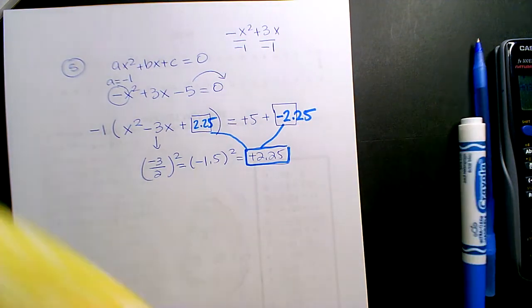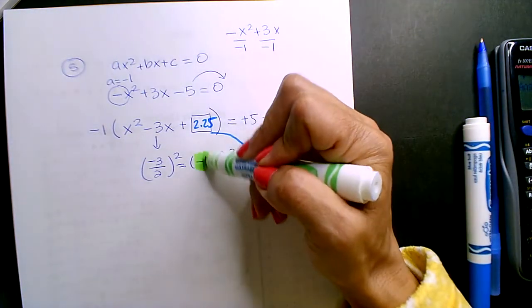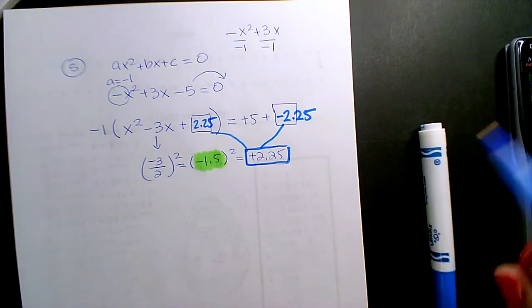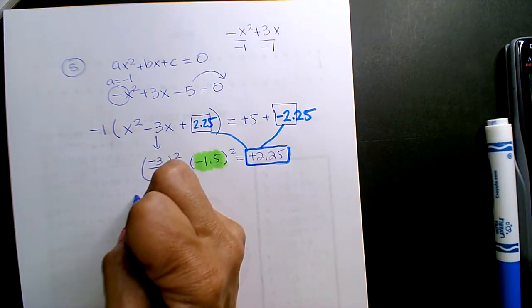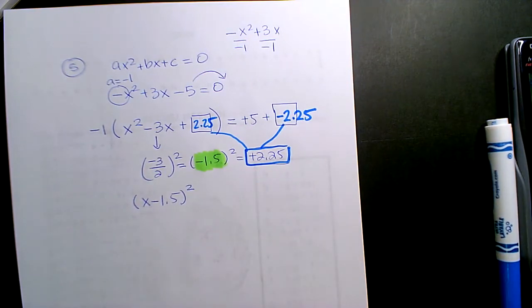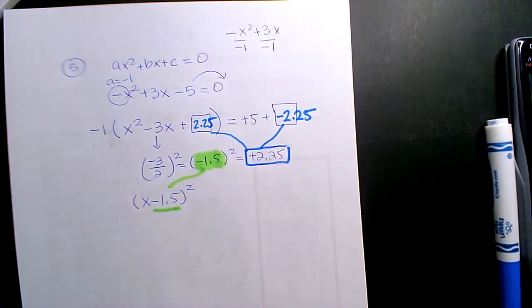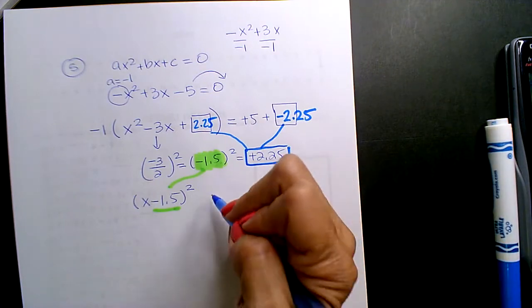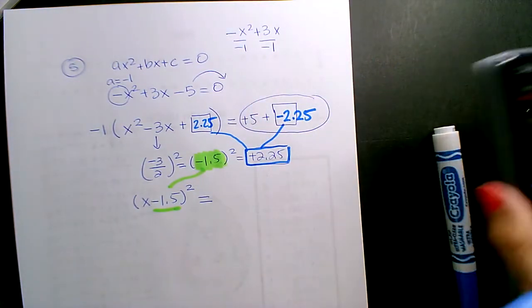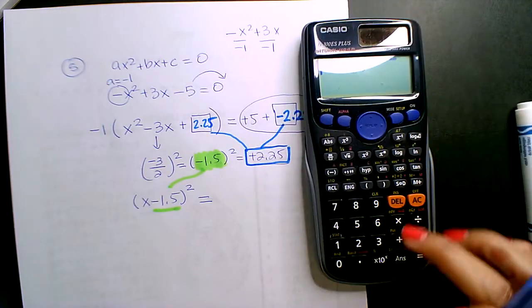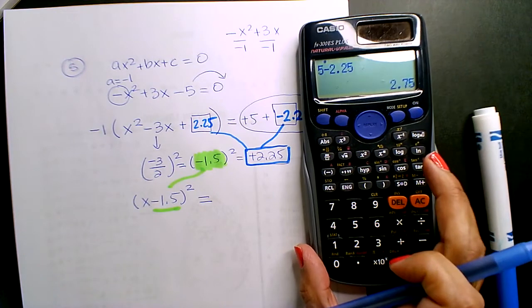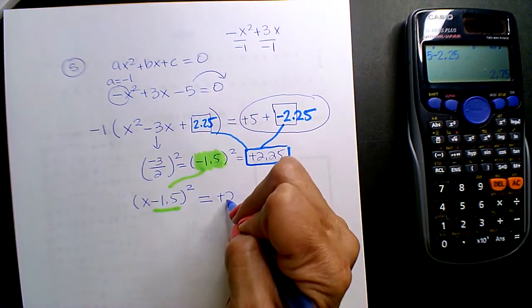So now what do I get? Well this part stays the same. This, B divided by 2, is the same for your complete square binomial squared. So this is still this. But now you get equal. Combine like terms. What is 5 minus 2.25? 2.75. Very good. Positive.